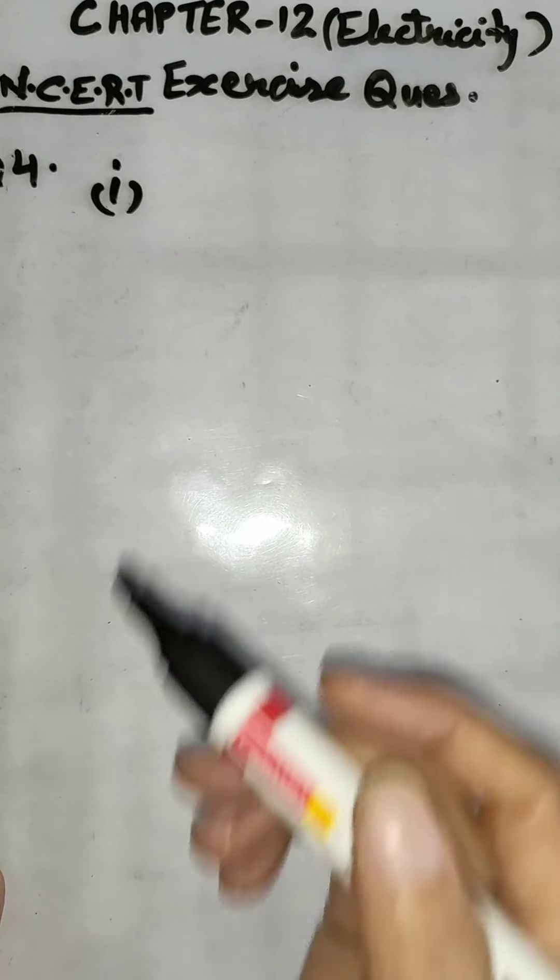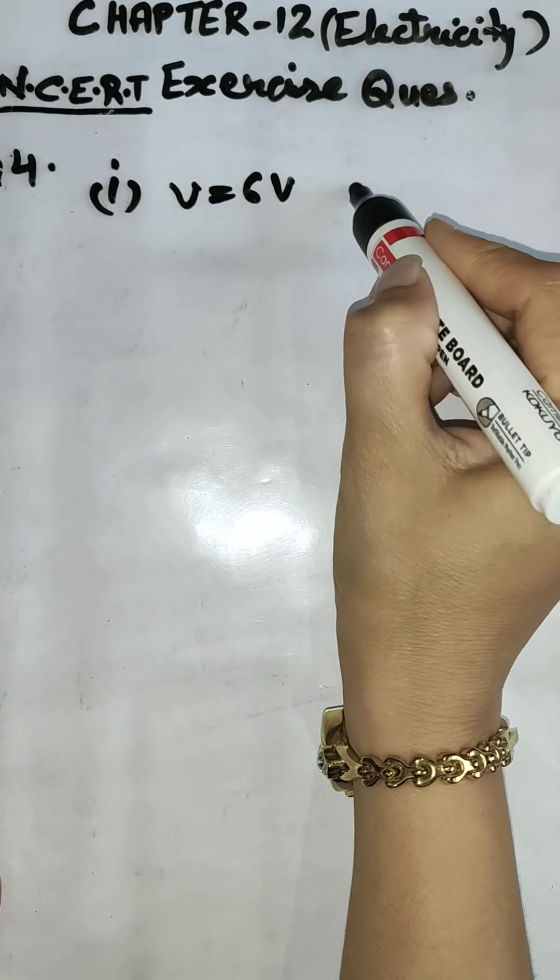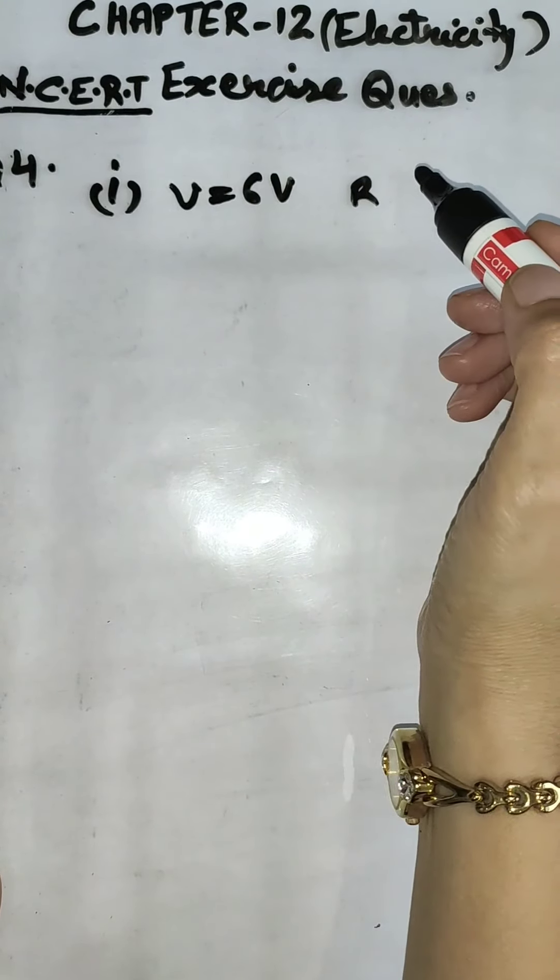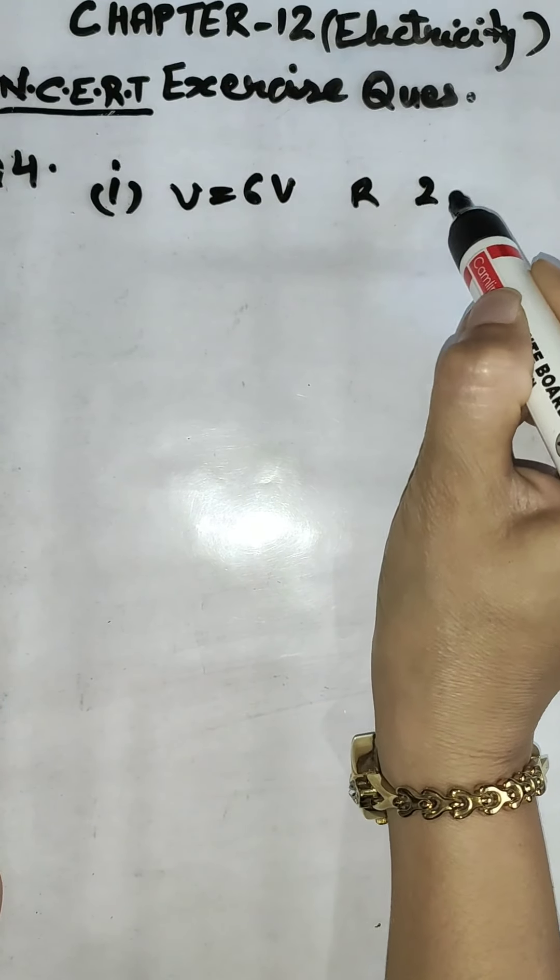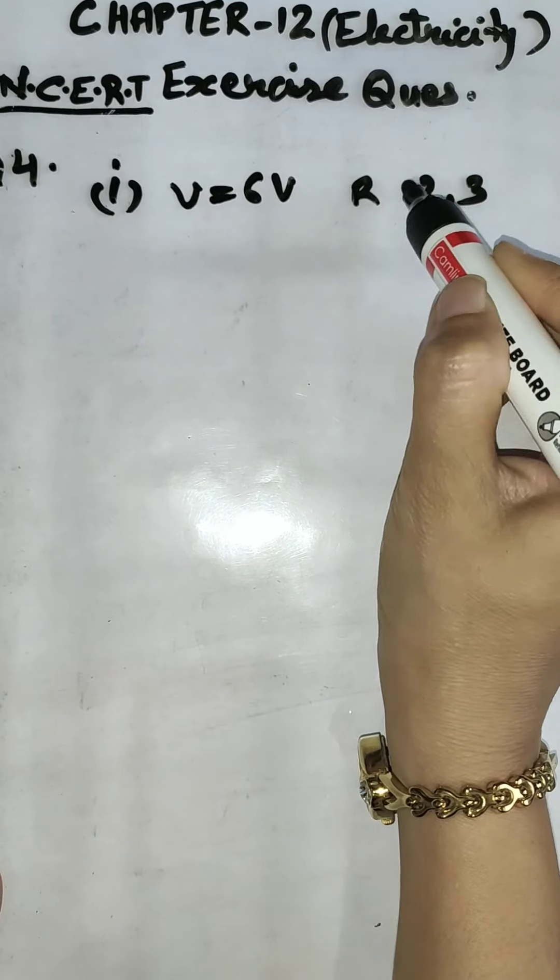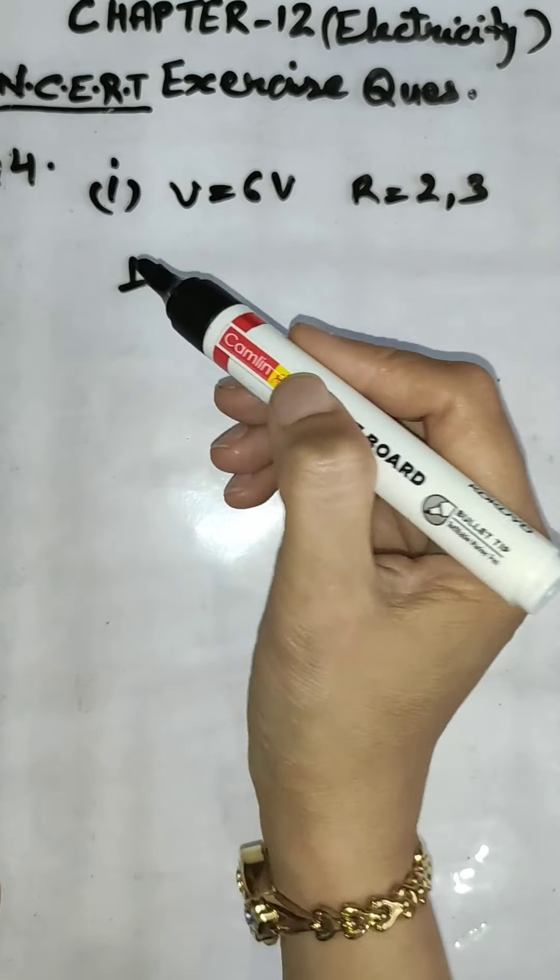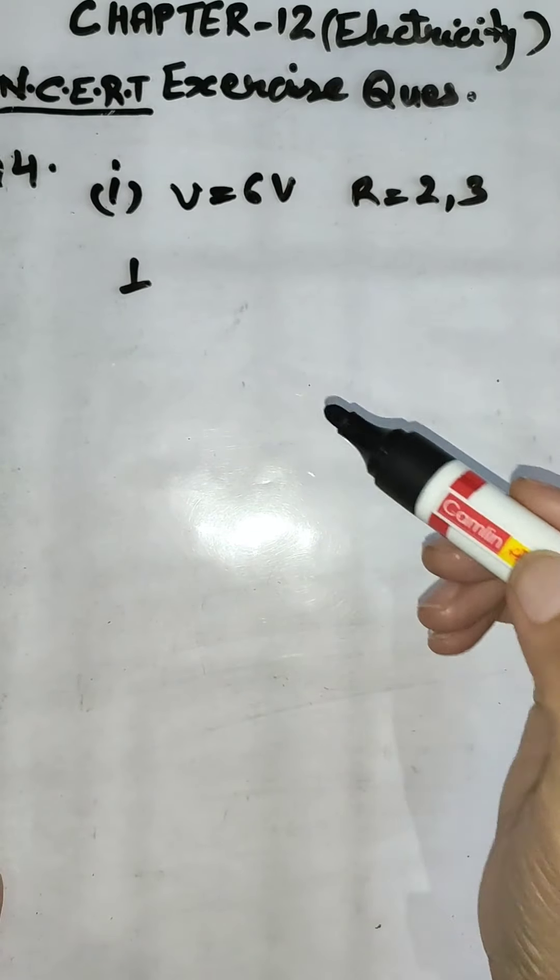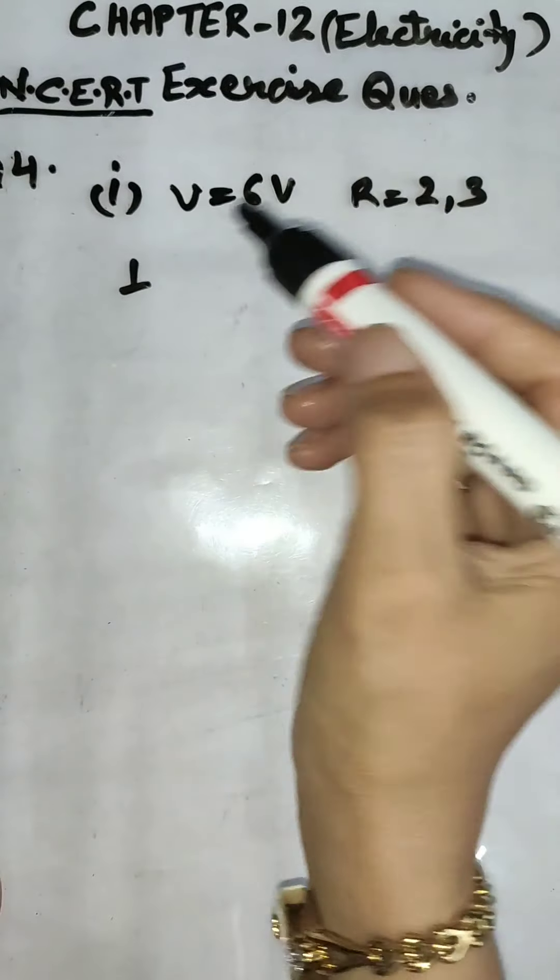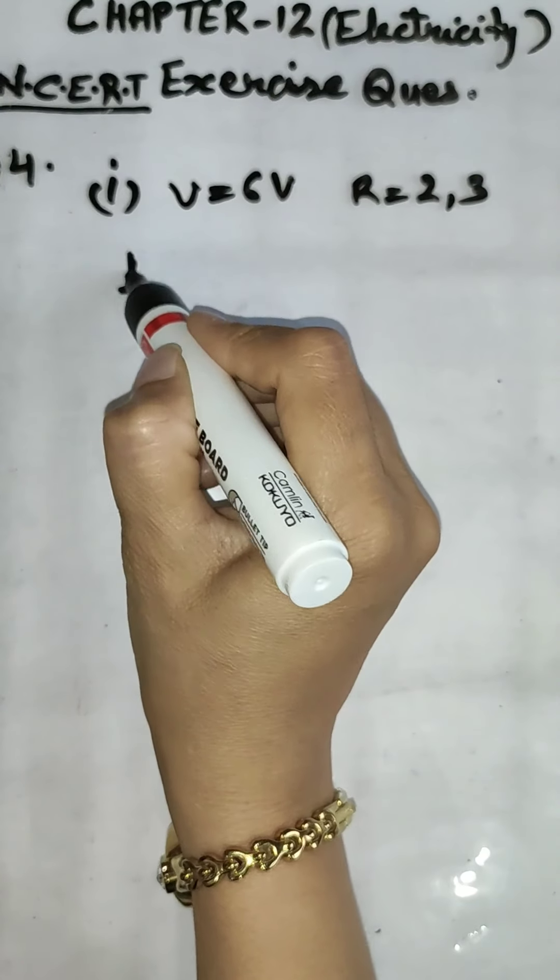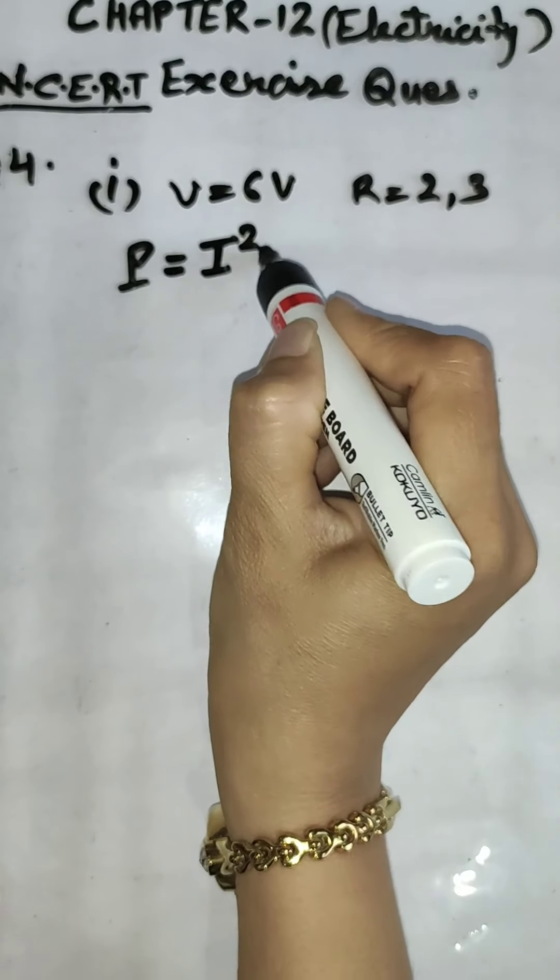In first case, we have given that V is equal to 6 volt and resistances have been given as 2 ohm and 3 ohm. We have to find power, so power is equal to I square R.